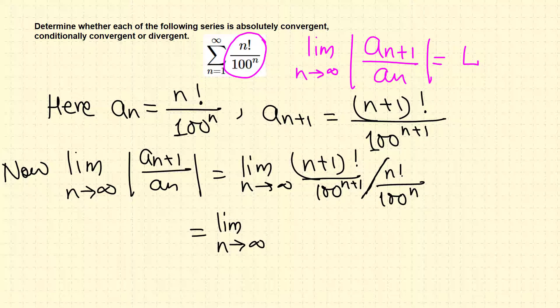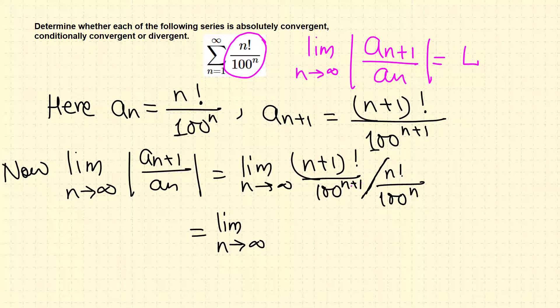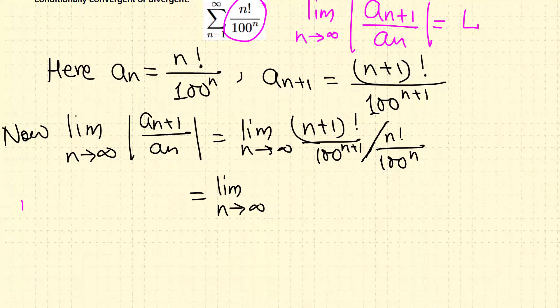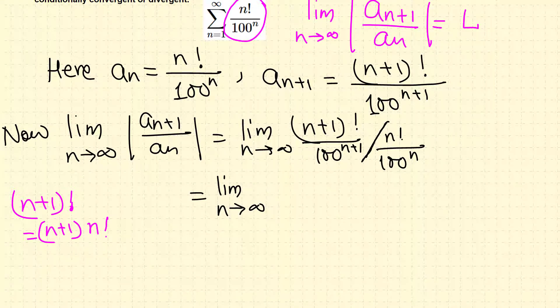Let me write it this way: (n+1) factorial is in fact (n+1) times n times (n-1) times (n-2) all the way to 1, or we can write (n+1) times n factorial.